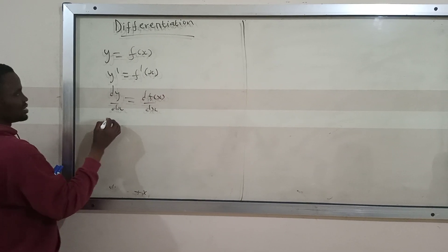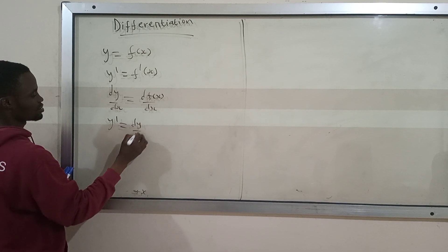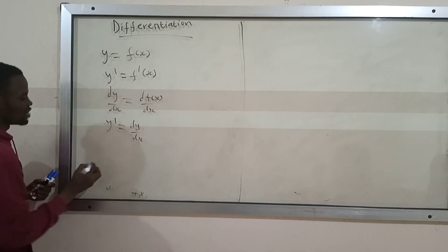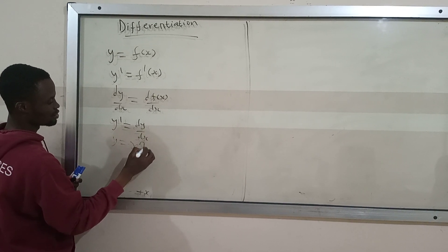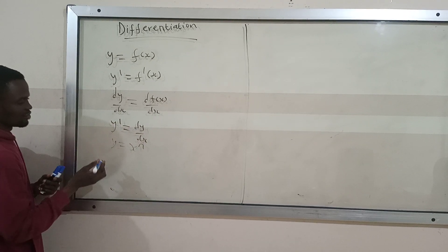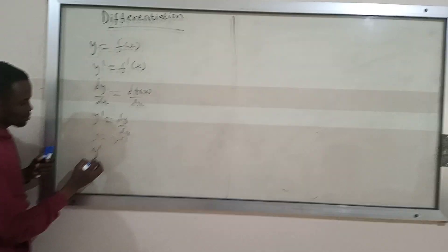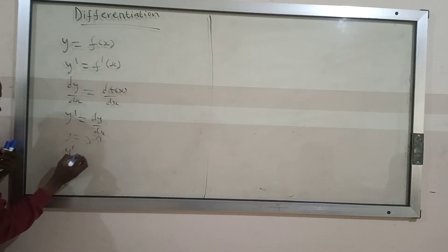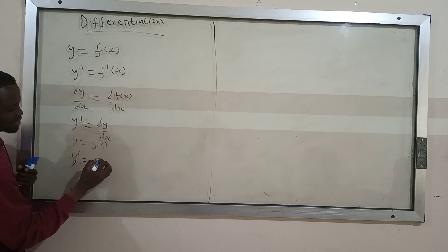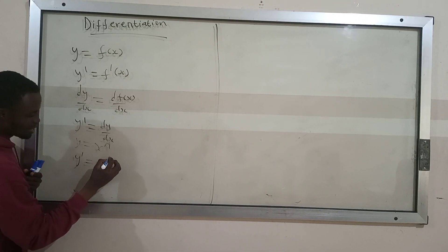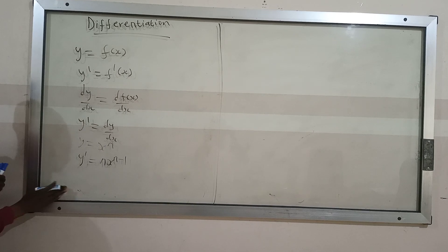And here, y prime is the same as dy/dx. So if you have y equals x raised to the power n, and you want to differentiate this, you are going to get y prime, or dy/dx, which is equal to n times x raised to the power n minus 1. So that is it.